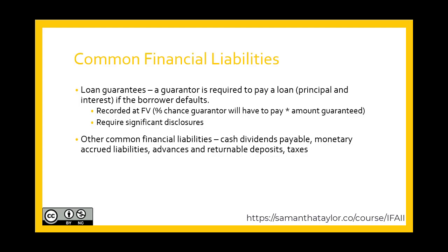Another common financial liability are loan guarantees. This is when a guarantor — for example, our company — is required to pay a loan if the original debtor defaults. If we as a company guaranteed a loan for another company or person, we need to record the fair value of this loan. That is calculated at the percentage chance the guarantor would have to pay times the amount guaranteed. Finance people may also call this the expected value. This requires significant disclosure to users of your financial statements.